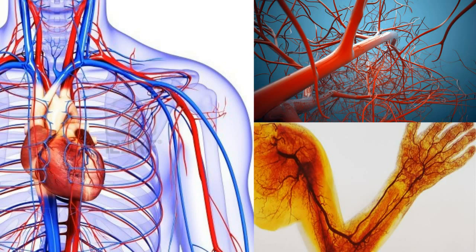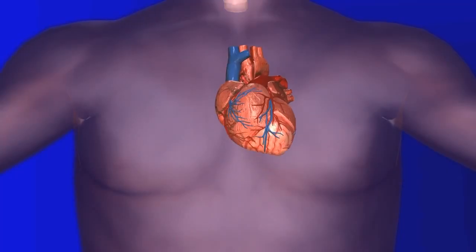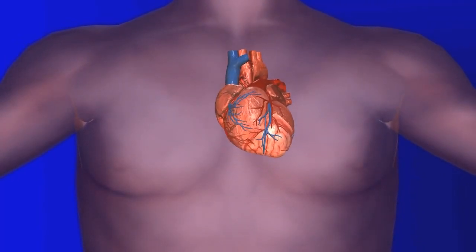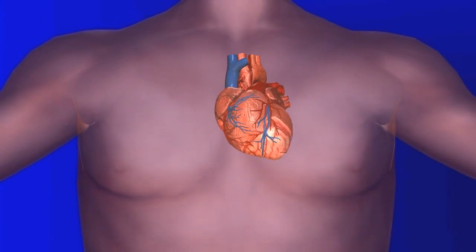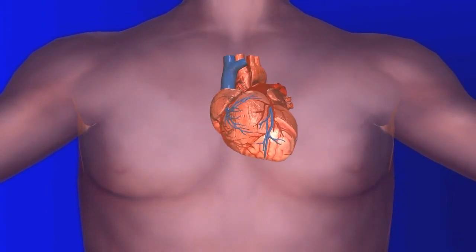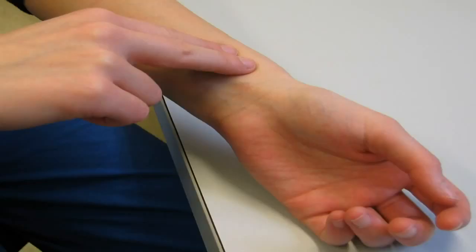Blood is a liquid, but our body is so amazingly designed that this liquid has become the medium of transportation for all gases as well as solids. The heart is the pump generating pressure to keep this transportation system running. We can feel the heartbeat by placing the middle and index finger of our right hand on the inner side of the left wrist.